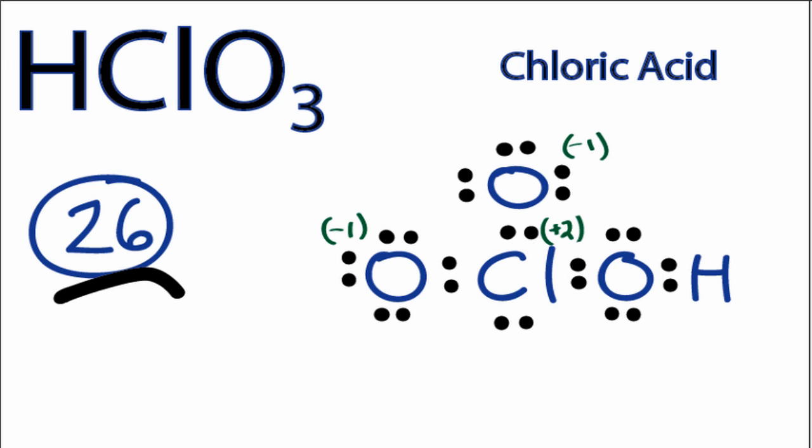When we calculate the formal charges, we find that the chlorine has a plus 2 charge, where these oxygens out here have a negative 1 charge, each of them. Everything else is 0, though. Since we want our formal charges to be as close to 0 as possible, we're going to need to do something to minimize the charges.